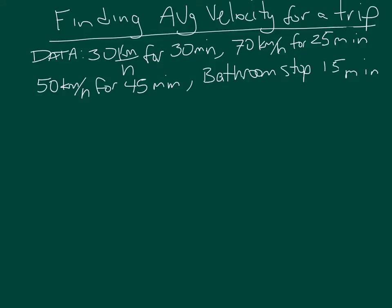This problem will show you how to find the average velocity for an entire trip. The information is written above: a person drives 30 kilometers per hour for 30 minutes, 70 kilometers per hour for 25 minutes, 50 kilometers per hour for 45 minutes, and makes a bathroom stop of 15 minutes.